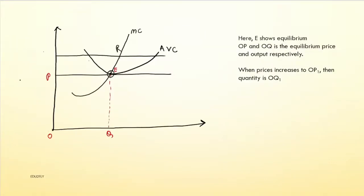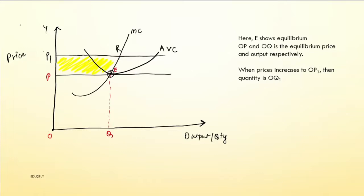Now let us understand this through a graph. The equilibrium point Y gives equilibrium price OP and equilibrium quantity OQ on the axes — price on the Y-axis and output/quantity on the X-axis. If the price increases from OP to OP1, then the Quasi Rent is the shaded portion above the variable cost. Quasi Rent = Total Revenue − Total Variable Cost. Total revenue in this case is the area OPEQ, and the extra area above variable cost gives us the Quasi Rent.